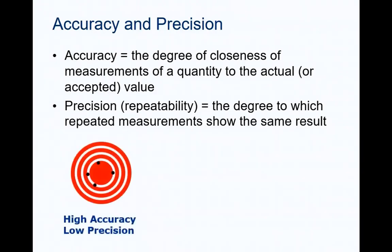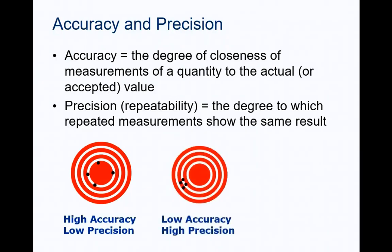A target analogy is sometimes used to differentiate between the two terms. Consider the arrows or dots on the target to be repeated measurements of a quantity. The first target shows that the arrows, or repeated measurements, are centered around the center of the target, the actual value. So, on the whole, the measurements are fairly close to the target, the actual measurement, making the measuring device accurate. But, the repeated measurements are not close to each other, so the precision of the measuring device is low.